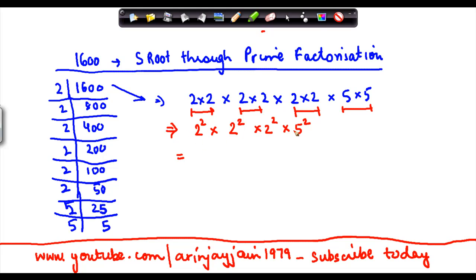Now, the square root of each of these numbers - so if I have to take a square root of all these numbers is 2 into 2 into 2 into 5, right? Each of them drop down, which is nothing but 40.